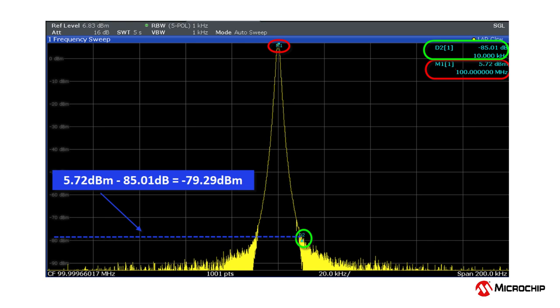So, in this image from the spectrum analyzer, we see the 100 megahertz peak has a power of 5.72 dBm. The power at the 10 kilohertz offset is 85.01 dB lower. So, when we subtract 85.01 dB from 5.72 dBm, we get negative 79.29 dBm, which agrees with the dBm level we see on the y-axis from this spectrum analyzer plot.